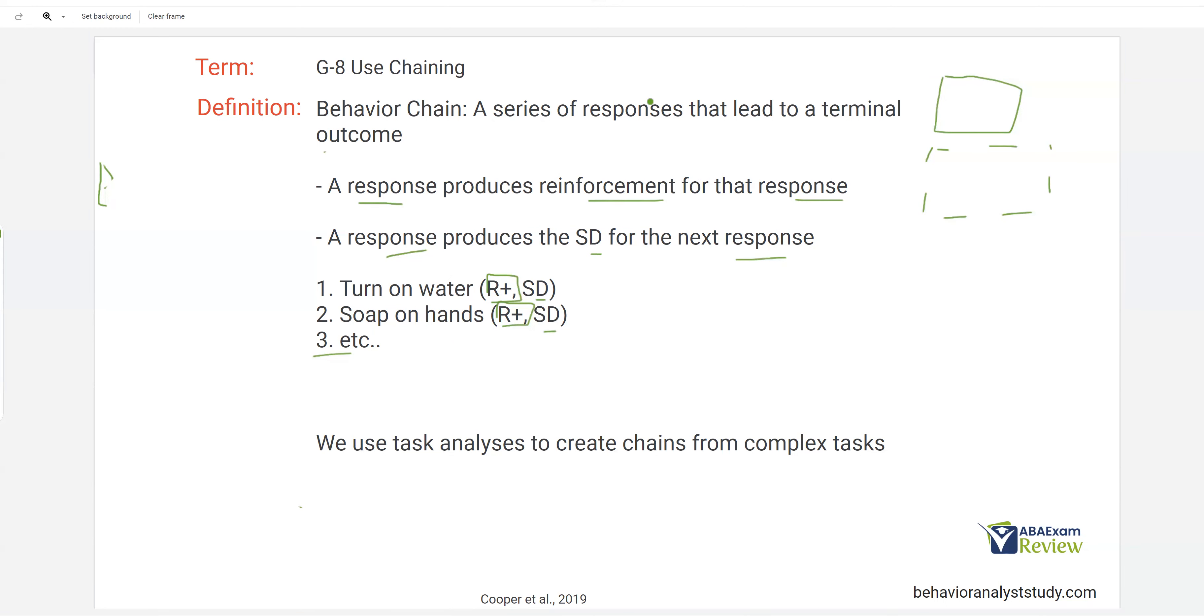And ultimately, once all those steps have been completed, we have our complex skill that we've broken into smaller steps. So a behavior chain is a very straightforward concept. Let's not overcomplicate that. Now, how do we get to a behavior chain? We have to conduct a task analysis. That's when we create the chains from these complex tasks.